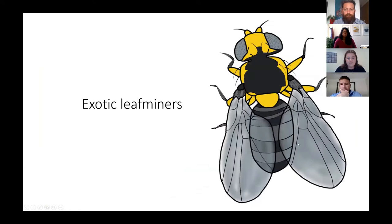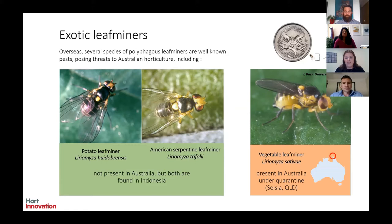Moving on to exotic leaf miners — these are polyphagous pests that eat a number of different hosts and are significant pests overseas, posing a threat to Australia's horticulture industry. The key pests are Liriomyza trifolii and Liriomyza sativae, the vegetable leaf miner. Potato leaf miner and American serpentine leaf miner are not present in Australia but both are found in Indonesia. The vegetable leaf miner was detected in the Torres Strait Islands in 2008, made its way to the mainland in 2015, and is currently present in Saibai, at the very tip of Cape York Peninsula.